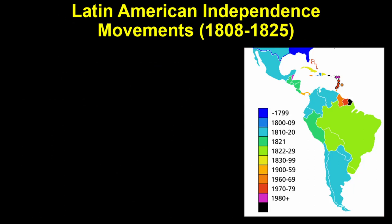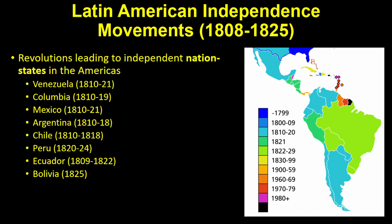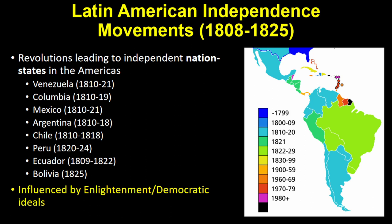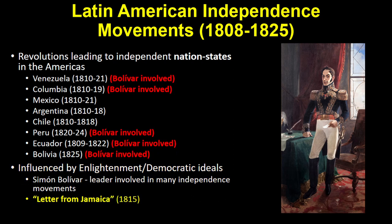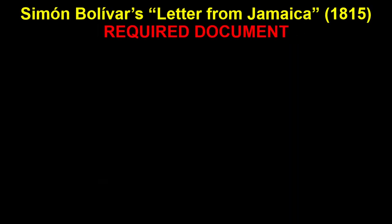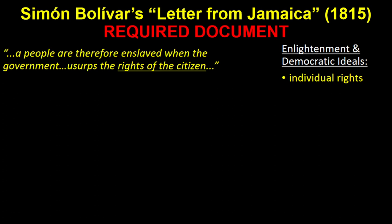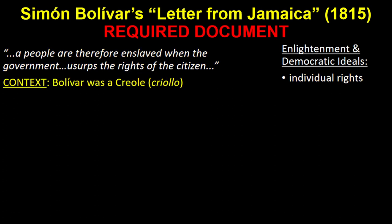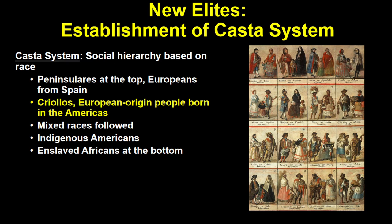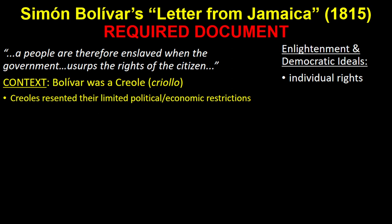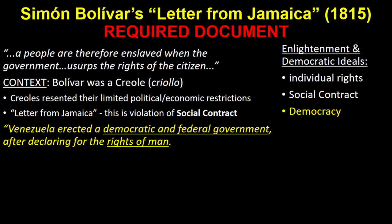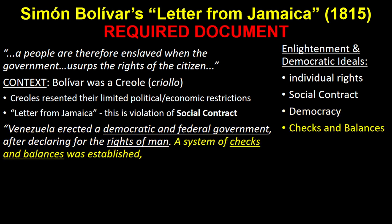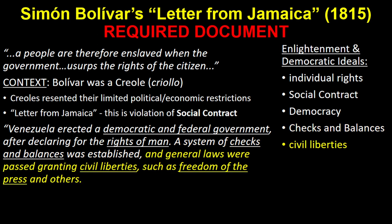Latin America saw a series of complicated independence movements resulting in many independent nation-states in the Americas. Enlightenment and democratic ideals influenced many leaders, and the one you need to know is Simón Bolívar, who was involved in many of these movements. His Letter from Jamaica is the last required document. It states: 'A people are therefore enslaved when the government usurps the rights of the citizen.' Bolívar, like most Latin American revolutionaries, was a Creole — the second tier of the casta system from Topic 4.7. The Creoles resented being restricted from the highest levels of government, which Bolívar described as a violation of their social contract. Venezuela erected a democratic and federal government with checks and balances, civil liberties such as freedom of the press, and became an independent government.